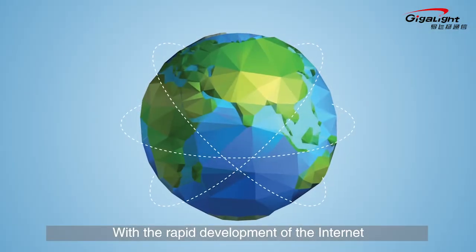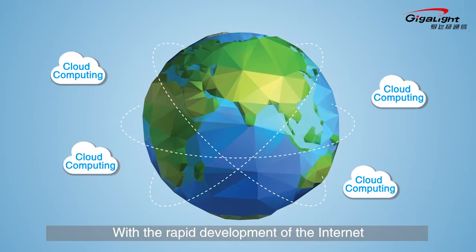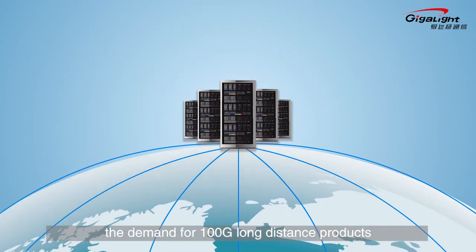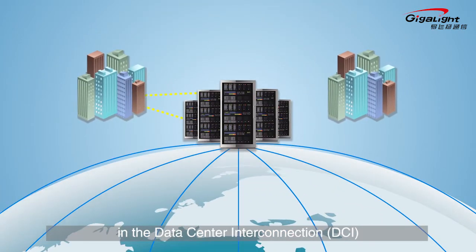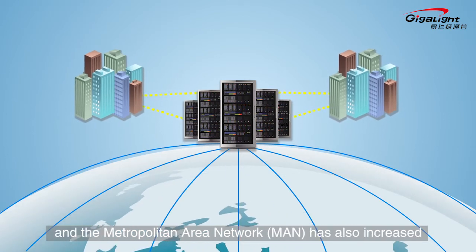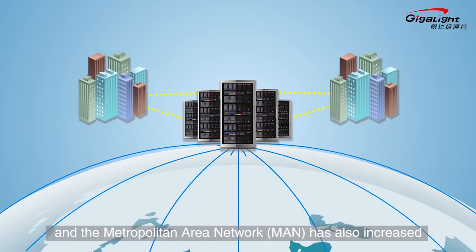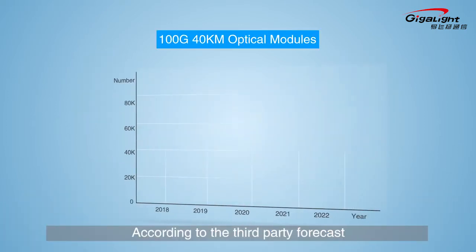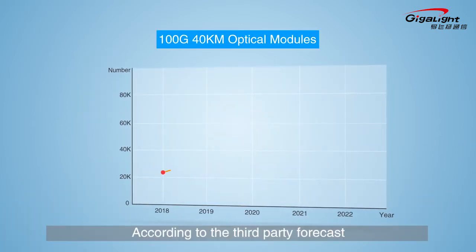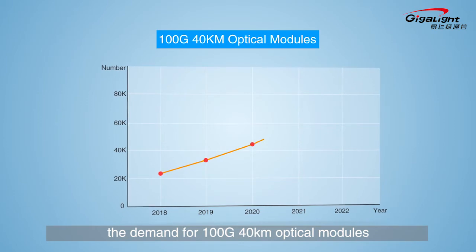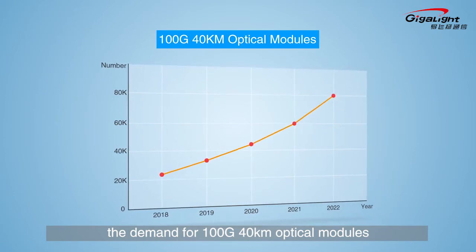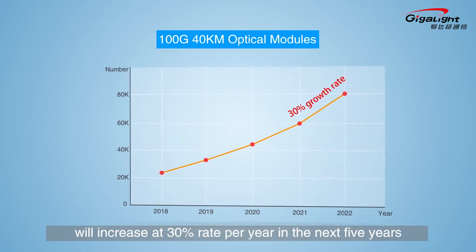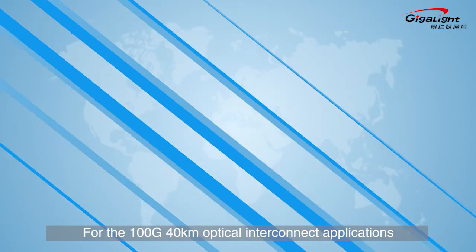With the rapid development of the internet and cloud computing industry, the demand for 100G long-distance products in data center interconnection and the metropolitan area network has also increased. According to third-party forecasts, the demand for 100G 40-kilometer optical modules will increase at a 30% rate per year in the next five years.